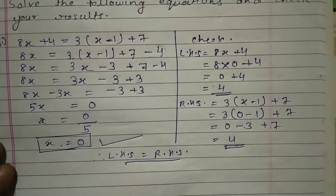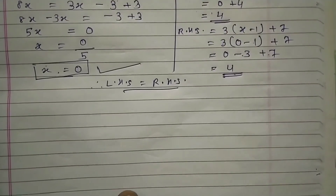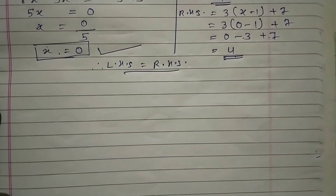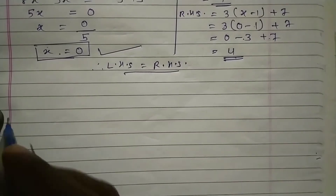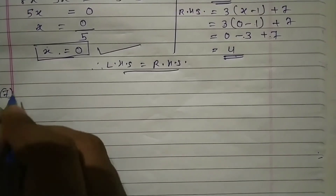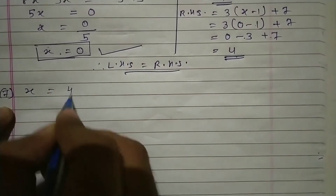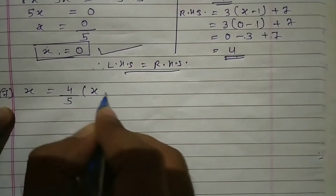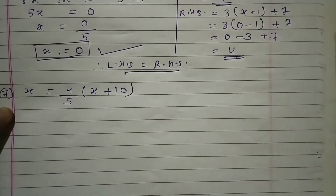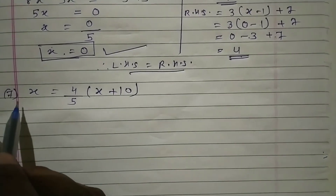X की value zero है। अब question number 7 करते हैं। Question number 7 में दिया गया है: x = 4/5 × (x + 10)। यहाँ variable है तो कोई problem नहीं।